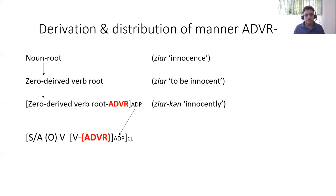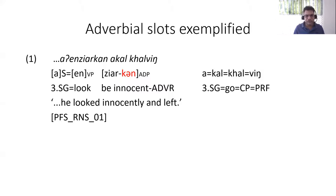The way a Pankwa adverbial is derived is as follows: a noun root can be zero-derived as a verb root — so zero, no affix — and it can be zero-derived further to be a noun. When it is postposed with an adverbializer like kan, it becomes an adverbial phrase and occurs after another verb. So kan occurs after the verb zero, and the whole becomes an adverbial phrase. So ziRkan is an adverbial phrase which modifies the verb n. For example: i n ziRkan akal kalbing — 'He looked innocently and left.'